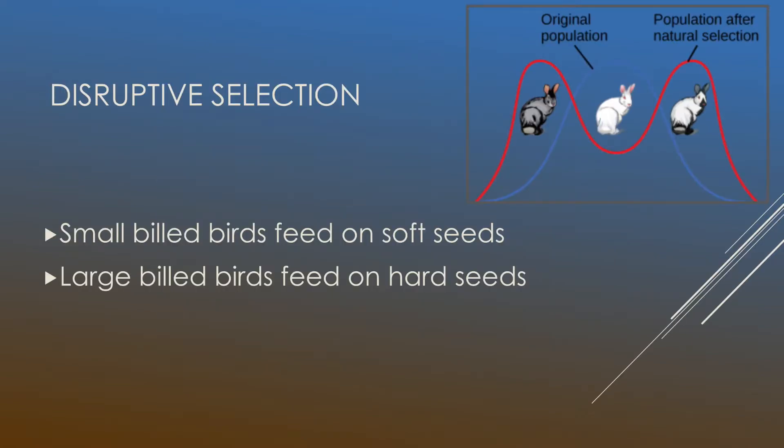And another example of this that I really like is small-billed birds that feed on soft seeds and large-billed birds that feed on hard seeds. So these two birds rely on two different forms of seeds as a source of nutrition. But the problem occurs when intermediate or middle-billed birds are not able to feed on either one of these.